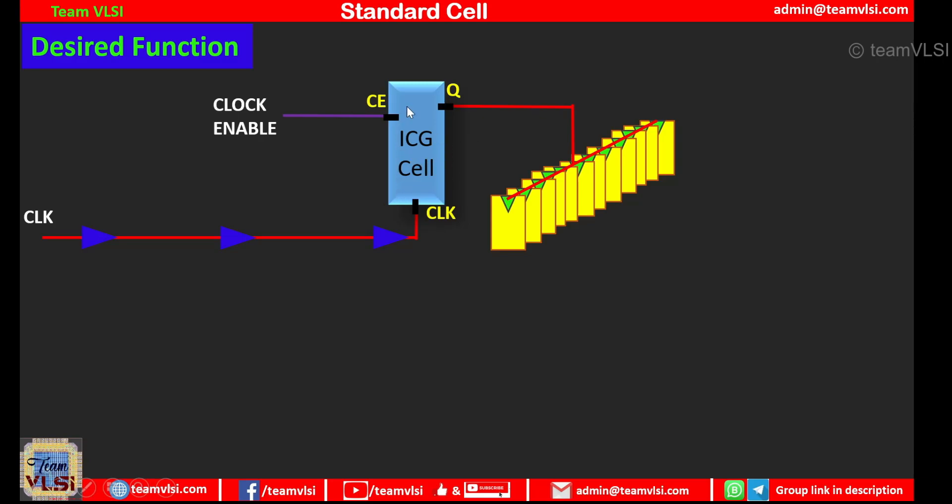So if we talk the function of this ICG cell then we can describe it as a truth table like this. So whenever the clock enable is one, this Q will be clock and whenever the clock enable is zero it won't allow to propagate the clock. So output will be zero. By looking at this table one can think why do we need this ICG cell, we can achieve this functionality by simply an AND gate.